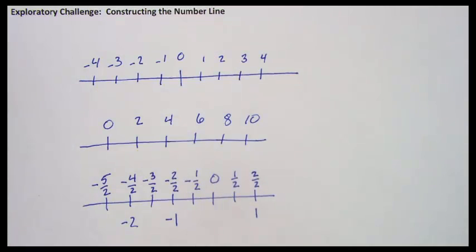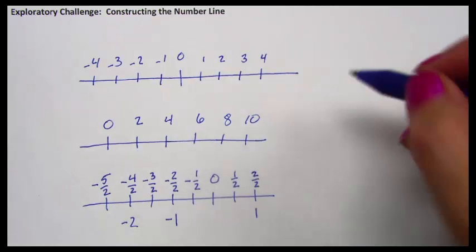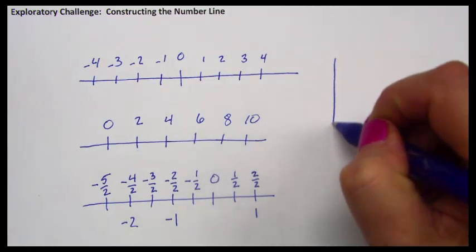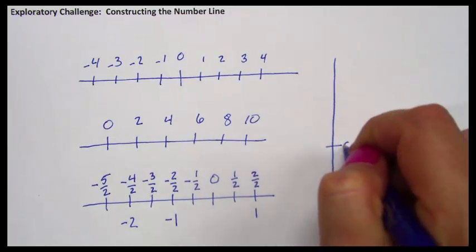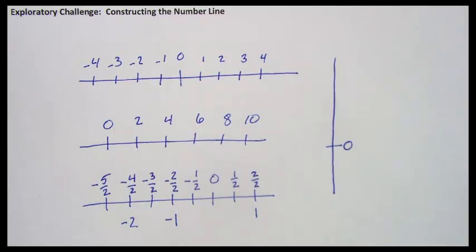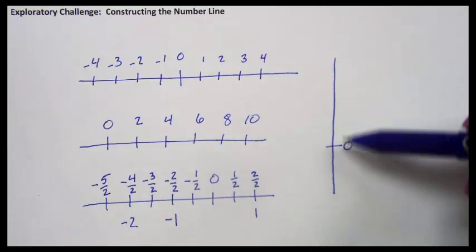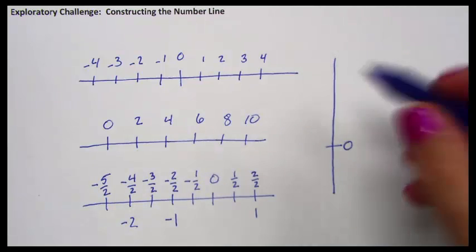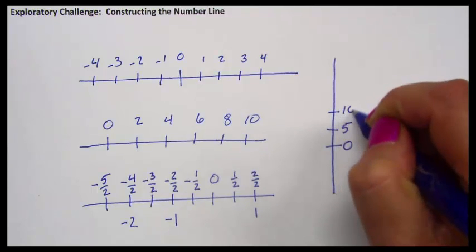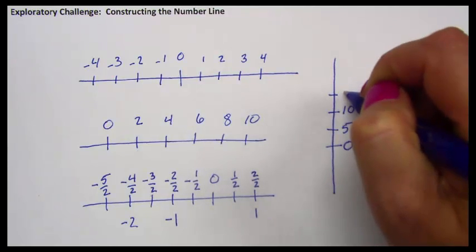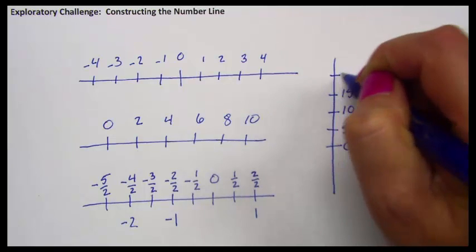I could also draw a vertical number line, and you've seen vertical number lines before, maybe on a thermometer. Vertical number lines have the same characteristics as horizontal number lines, except that the larger numbers are towards the top. I'm making this vertical number line count by fives.